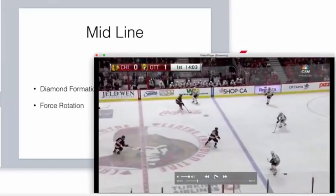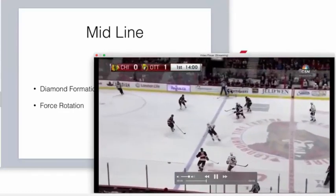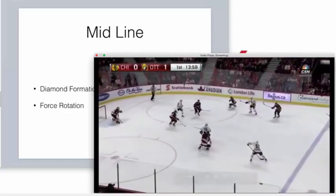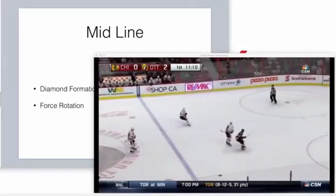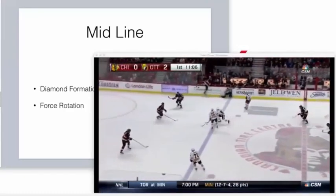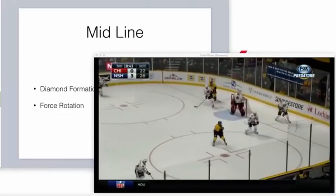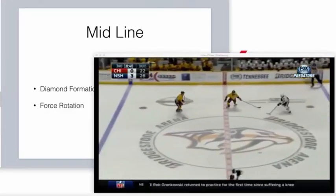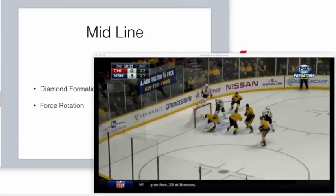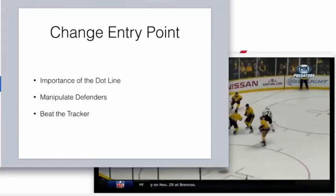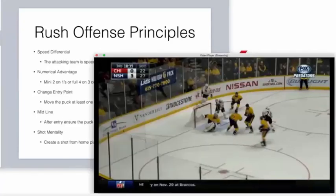Four more clips: puck in the middle of the ice, not being afraid to go back because that creates speed differential. Now Kane's flying — there's your mini two-on-one. Then another two-on-one, puck crosses the midline, there's the diamond, and the puck comes back to the D for a chance. Next clip: the D gets active in the rush, gives the puck to Kane in the middle of the ice, changes the point of attack, crosses the midline, creating a shot. Then Kane gets the middle, goes to the outside, changes the point of attack after entry and crosses the midline.